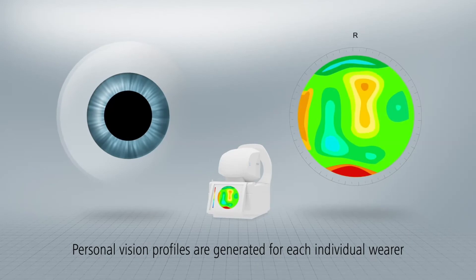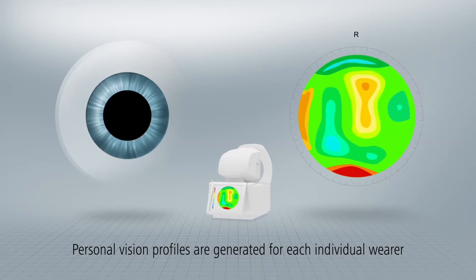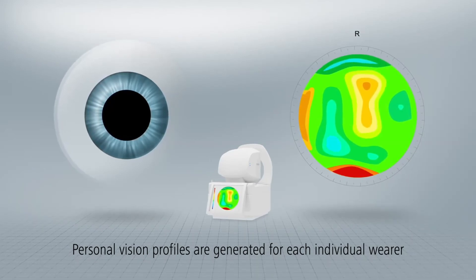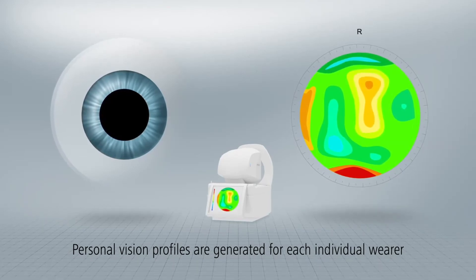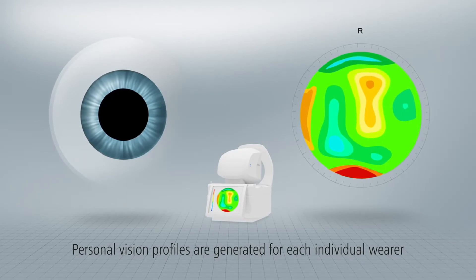Using up to 1500 measuring points, it measures the eye in a matter of seconds and determines your visual performance for daytime and nighttime vision to the nearest one-one-hundredth of a diopter.